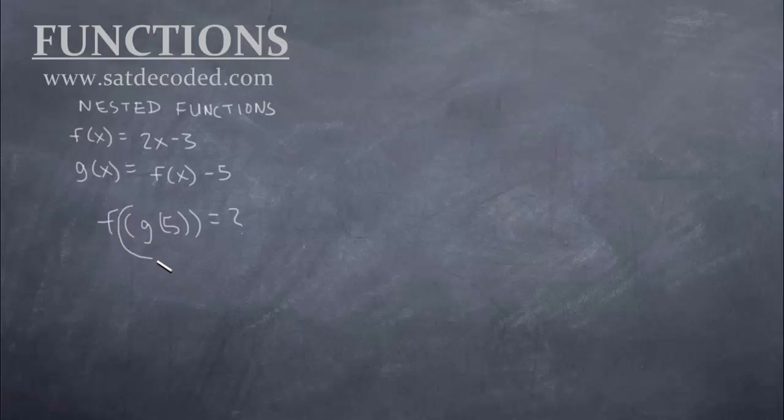Well, again we have to do the inside functions first, so let's first find out what g(5) equals. According to our master formula for the function of g, we have to use this. So the input is 5, so we're gonna take that and replace it right here. So g(5) actually equals f(5) minus 5.